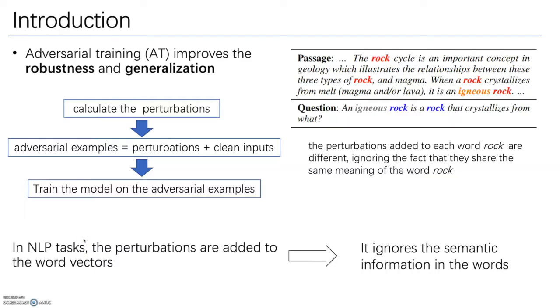As we know, adversarial training is a general regularization method that can improve models' robustness and generalization performance. In practice, adversarial training first calculates the perturbations, then adds them to the inputs to construct new training examples.